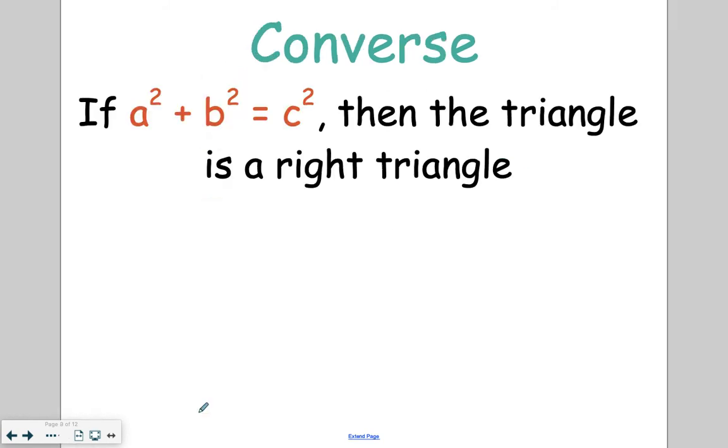The last thing we're going to talk about is the converse. What the converse means is switching the if and the then part of the statement. So the original Pythagorean theorem said if it is a right triangle, then A squared plus B squared equals C squared. This converse flip-flops it. So it says if A squared plus B squared equals C squared is an equation that works, then those three sides must form a right triangle.